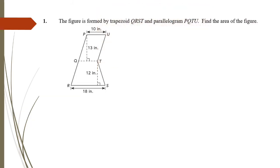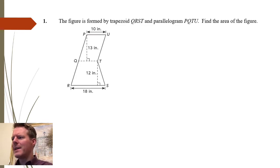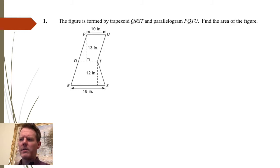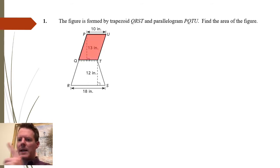The first one says the figure is formed by trapezoid QRST and parallelogram PQTU. Find the area of the figure. You don't even have to figure out what it's made up of — they are telling you in the problem this is made of a parallelogram and a trapezoid. So first let's take apart the parallelogram since it's on top.